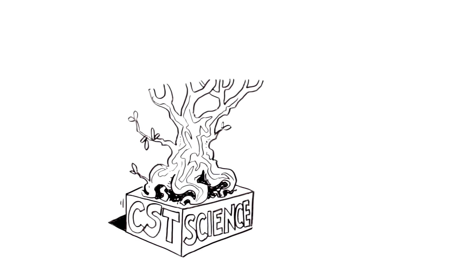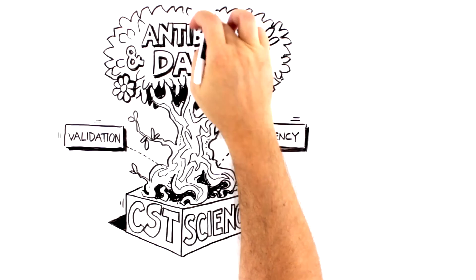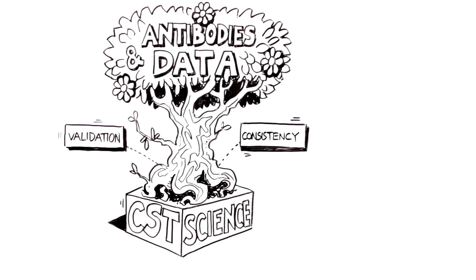Our process is like a tree, where the fruits of our labors, antibodies and data, bloom from a trunk sturdy with validation and consistency. However, while there are many blossoms, not all of them bear fruit, and not all fruit are of high enough quality to be picked as a product.